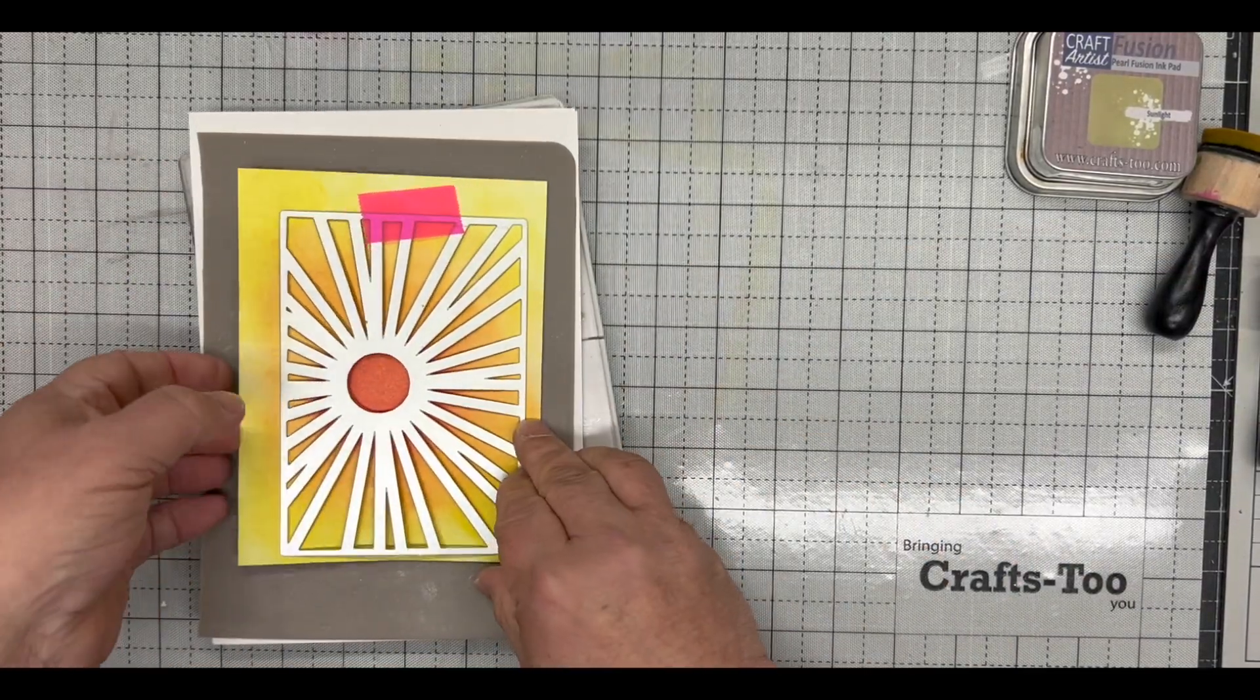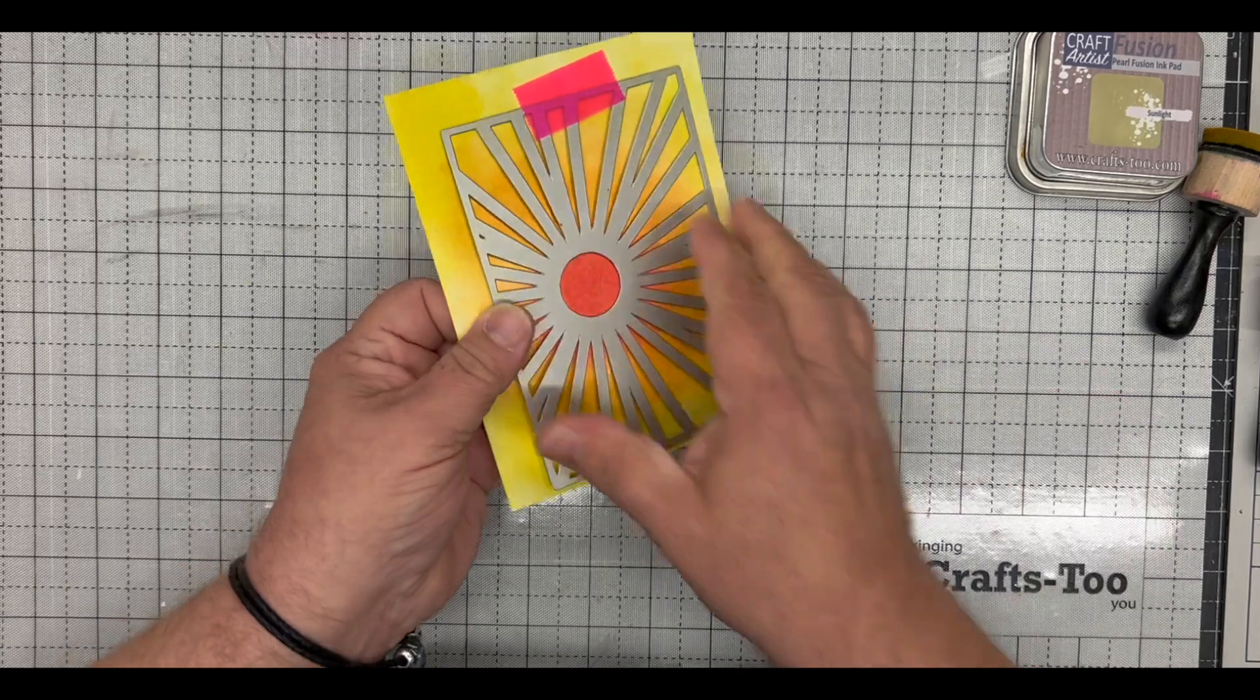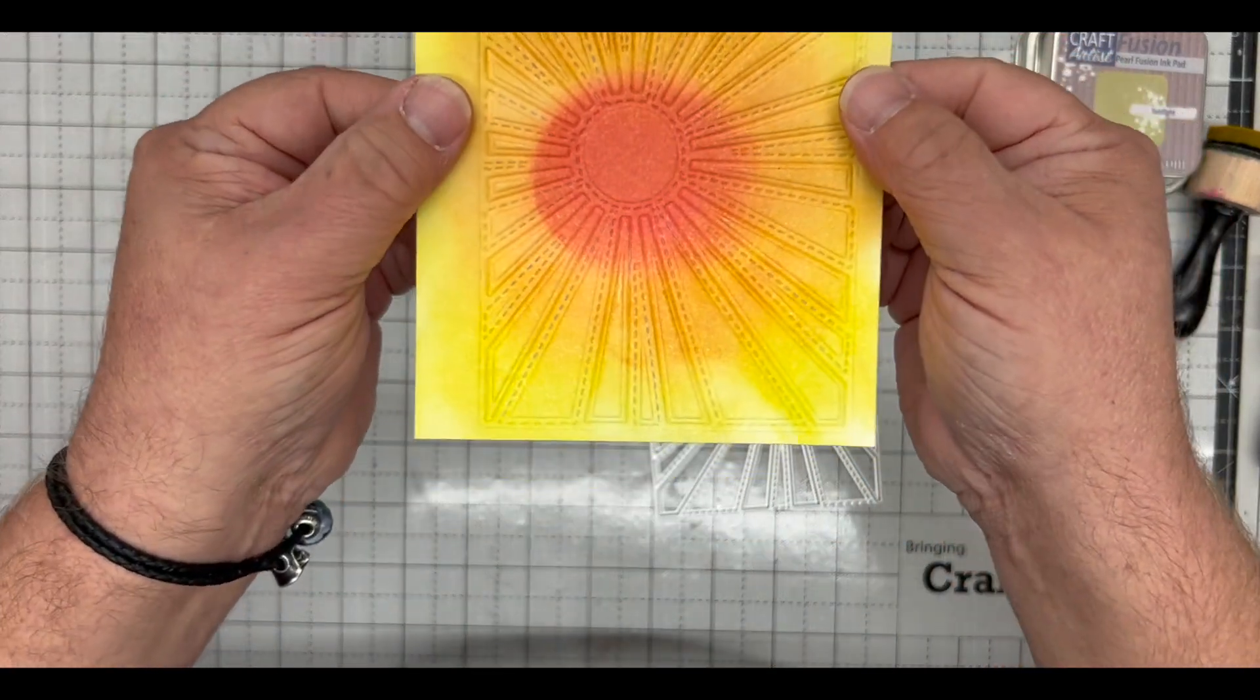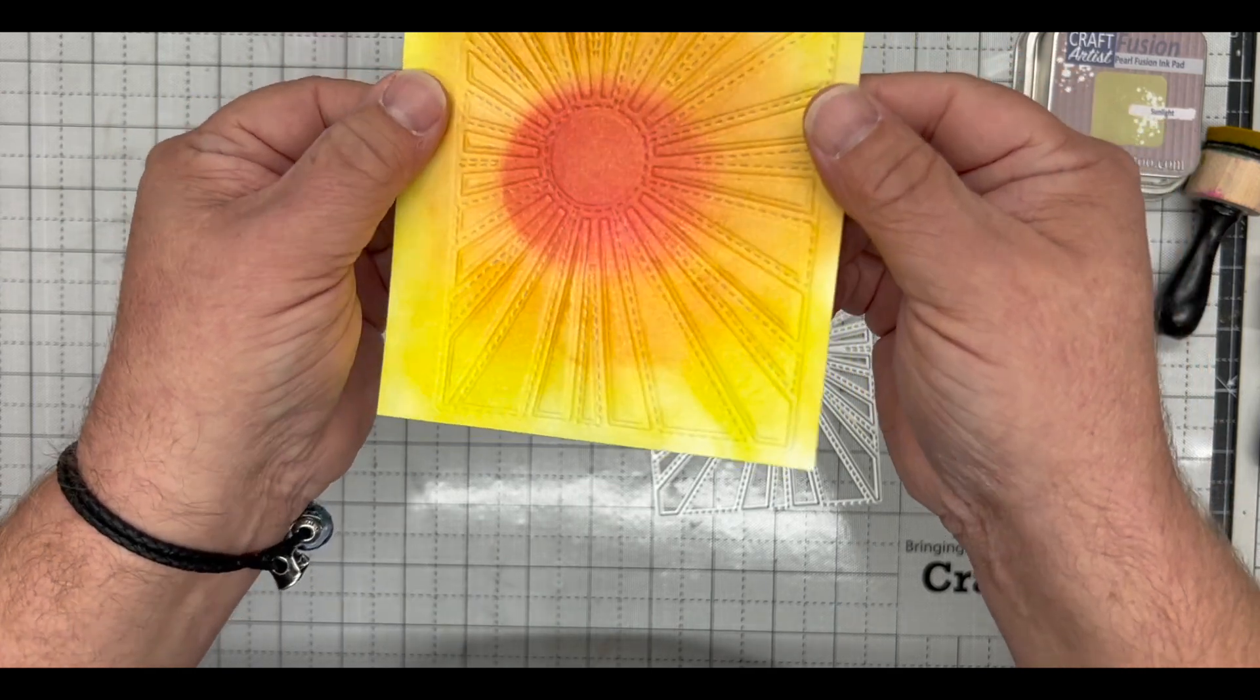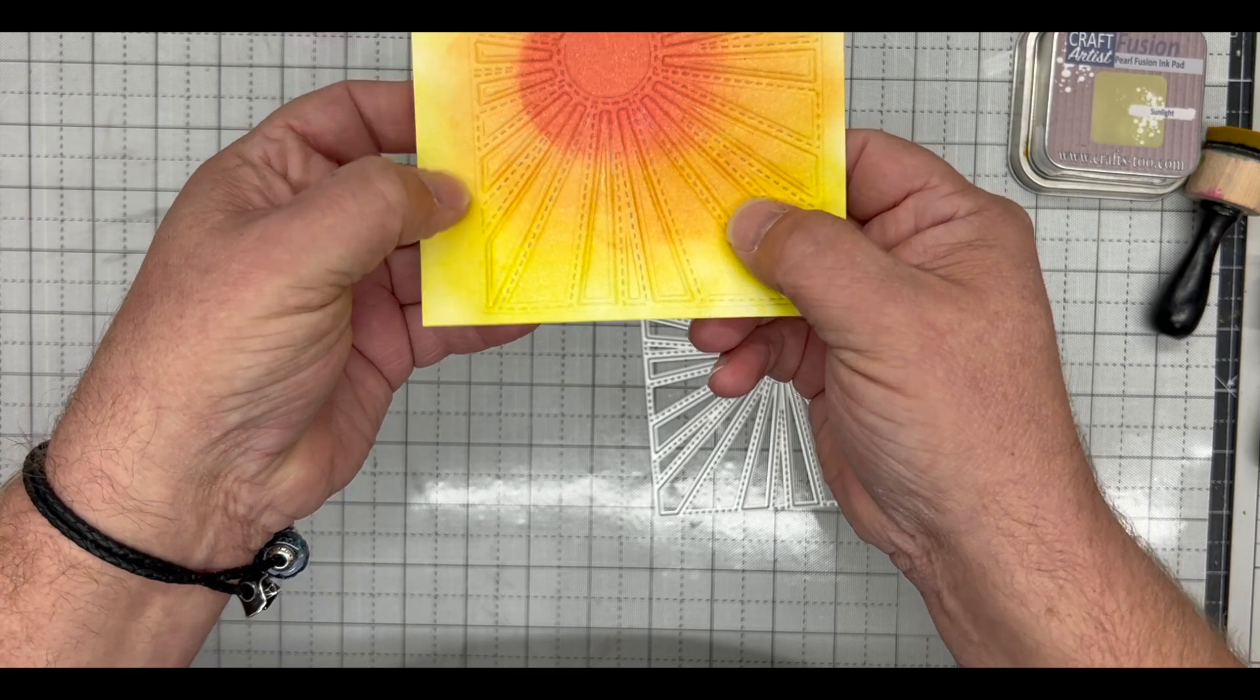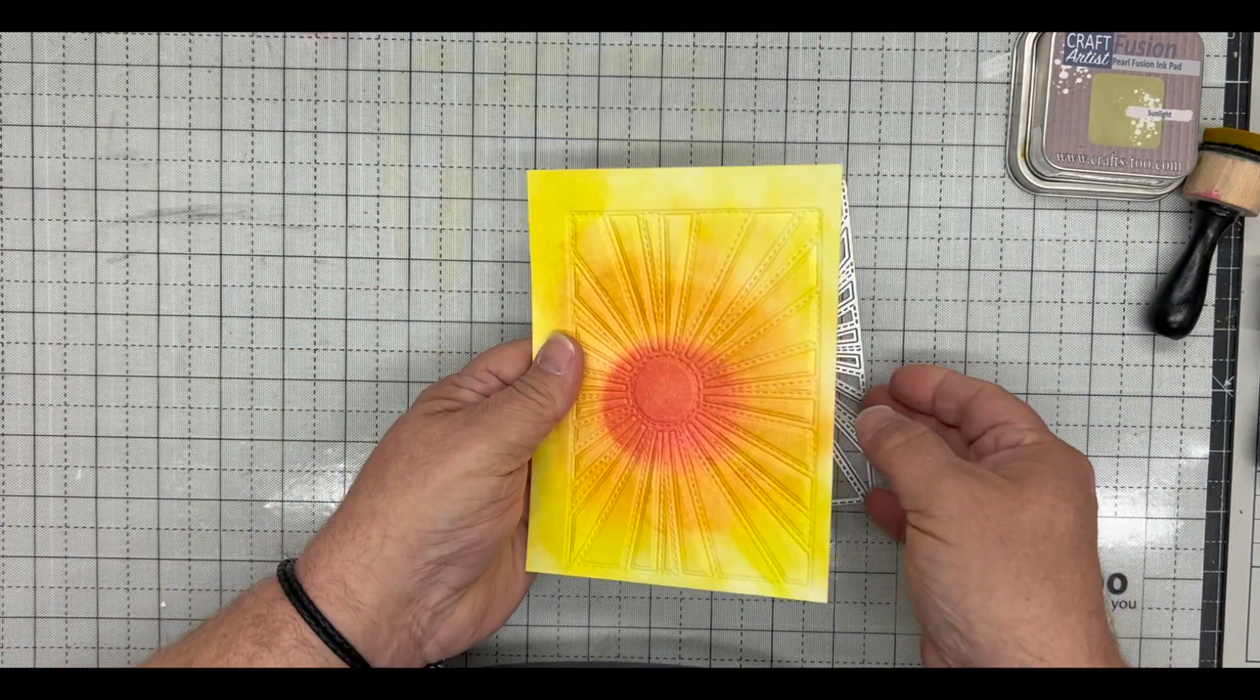And when we remove that combination, you'll see then that the pattern of the die has been completely embossed into the card, giving you an absolutely perfect quilted look as if we stitched that into some wadding.